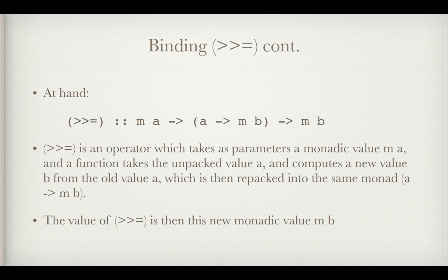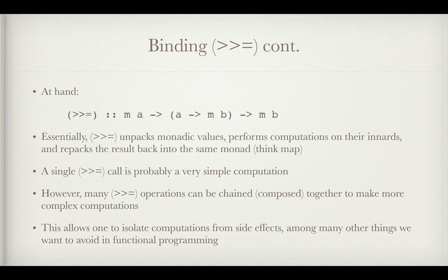So bind is an operator which takes an MA and a function that takes an A and gives you an MB and sort of shoves MA into that function. Shoves MA into that function or takes A out of its box M and does some computations with it in this function A to MB. And this function gives you back an MB from that A. So the value of bind is in this new monadic value MB. So essentially what a bind does is unpacks monadic values, performs some combination on their insides, and then repacks the result back into the same monad.